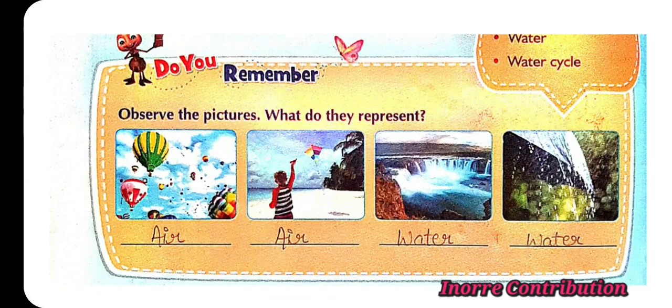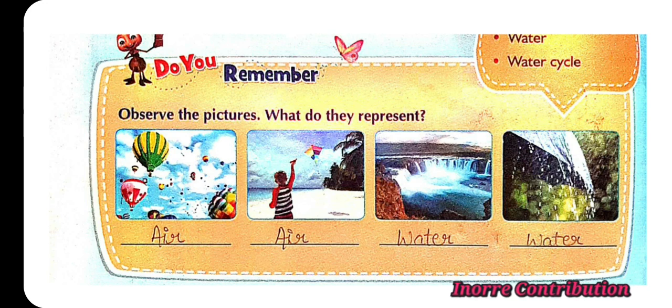Observe the pictures. What do they represent? Air. Second picture, air. Child is flying the kite. Second picture, waterfalls, water. Last picture, rain, water.